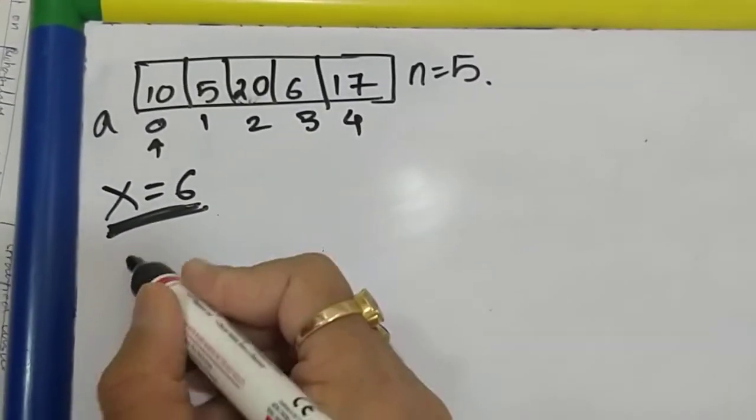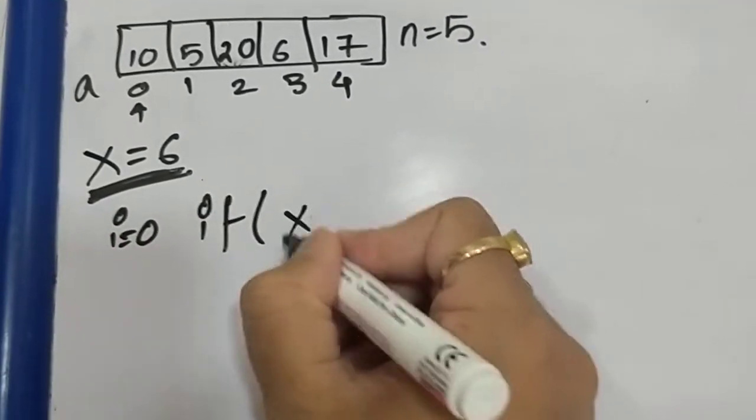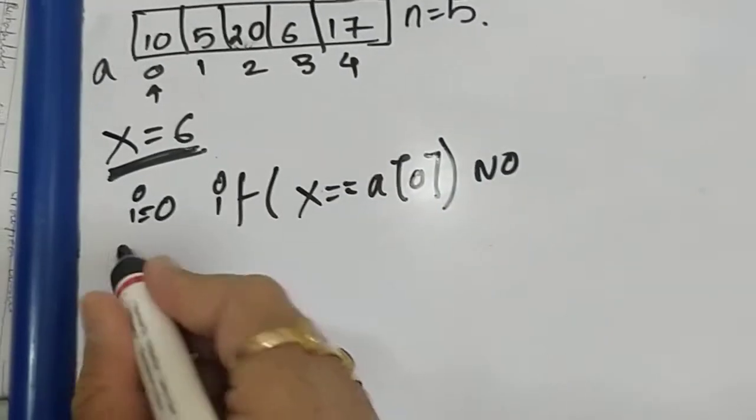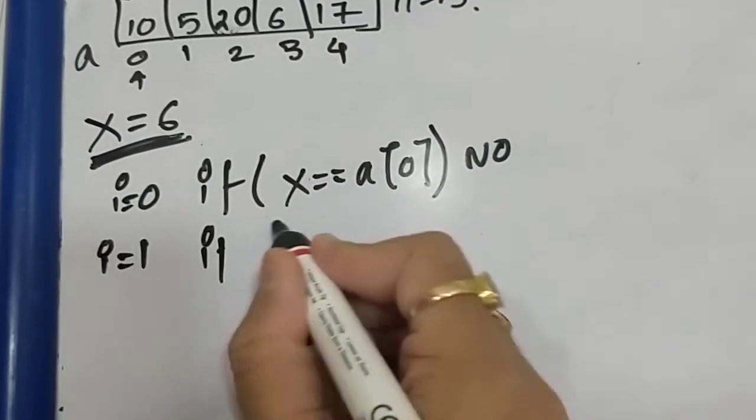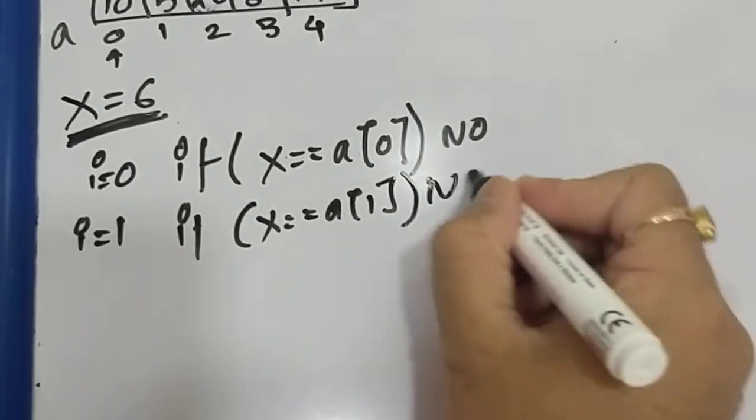So how is it going to work? First i will be 0. We check if x equals a[0]? No. Then i becomes 1. If x equals a[1]? No.